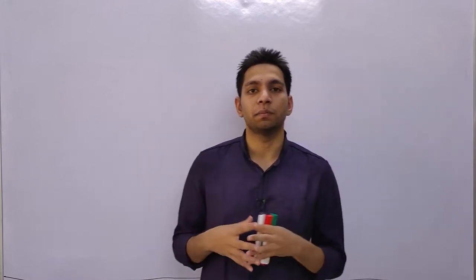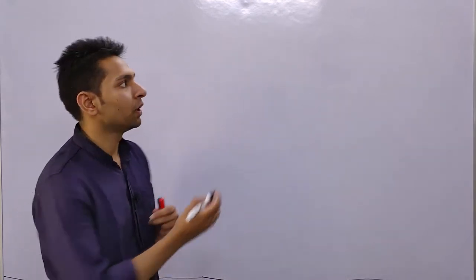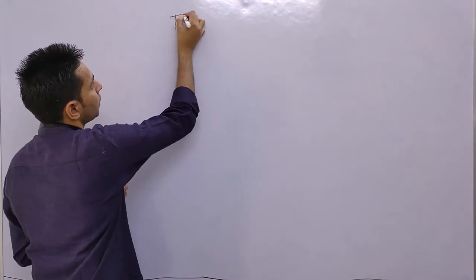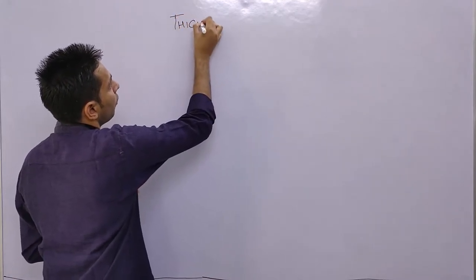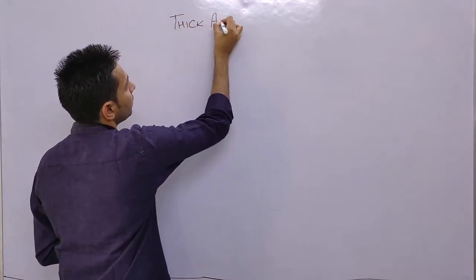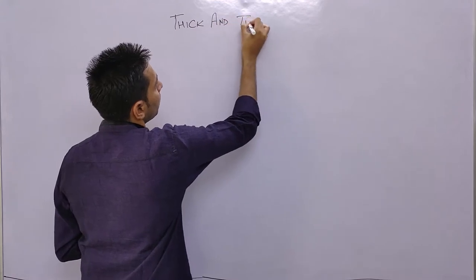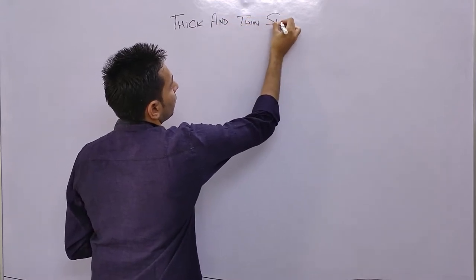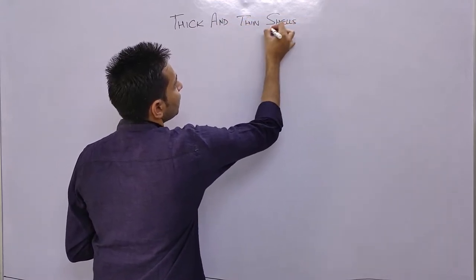From a GATE perspective, this topic is not so important — around one question is asked in five years. The idea of thick and thin shells is very simple and the questions are very straightforward, so you do not have to go into much trouble while solving previous year questions on thick and thin shells.